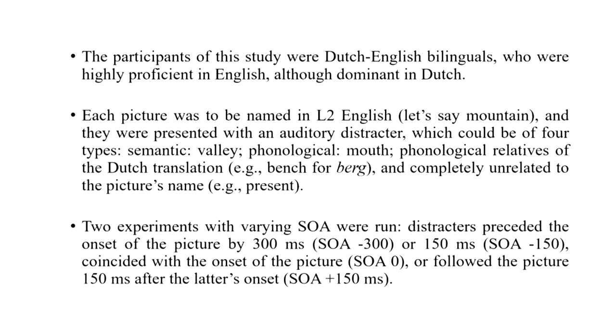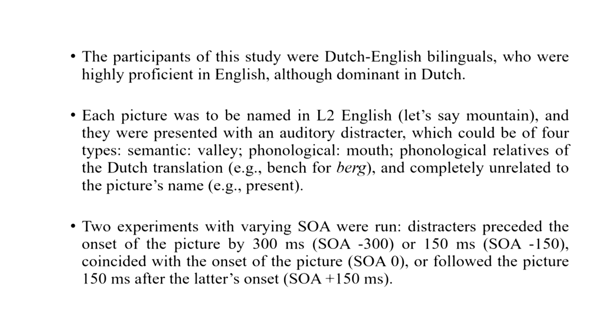Pictures — for example, a mountain — were presented with an auditory distractor of one of four types: 'valley,' a semantic relative of 'mountain'; 'mouth,' a phonological relative of 'mountain'; 'bench,' a phonological relative of the Dutch translation 'berg'; or an unrelated word like 'present.' They conducted two experiments with varying SOAs — specifically SOA minus 300ms, SOA minus 150ms, SOA 0, and SOA plus 150ms. In one experiment all distractors were English words; in the other all distractors were Dutch words.